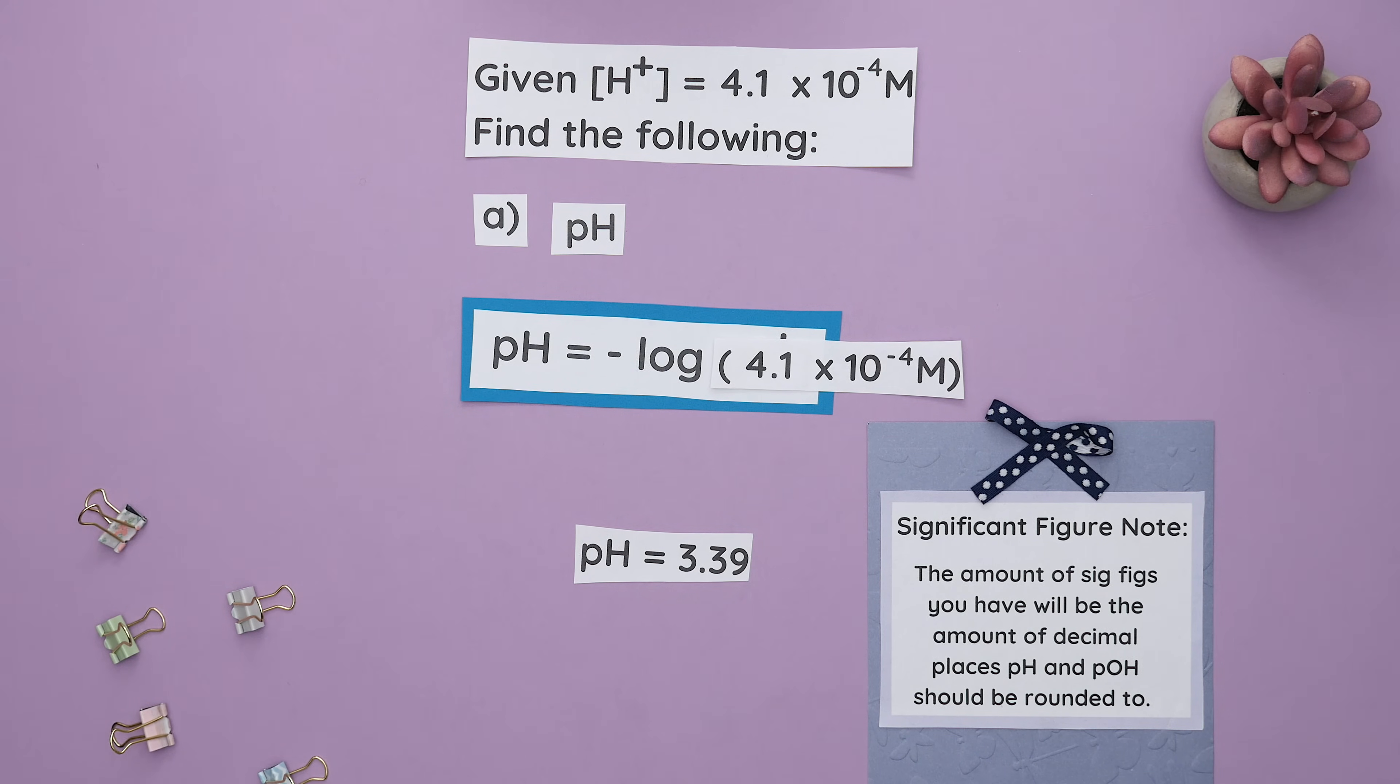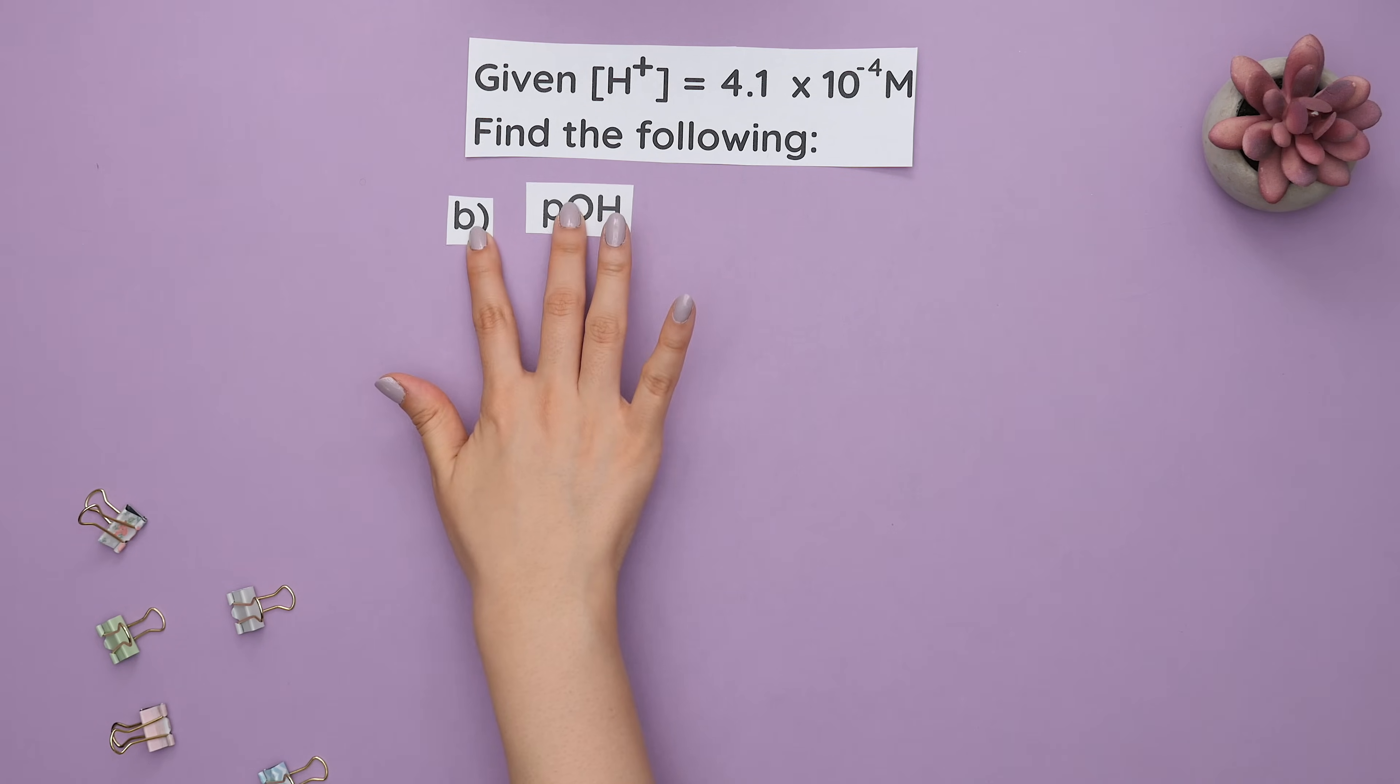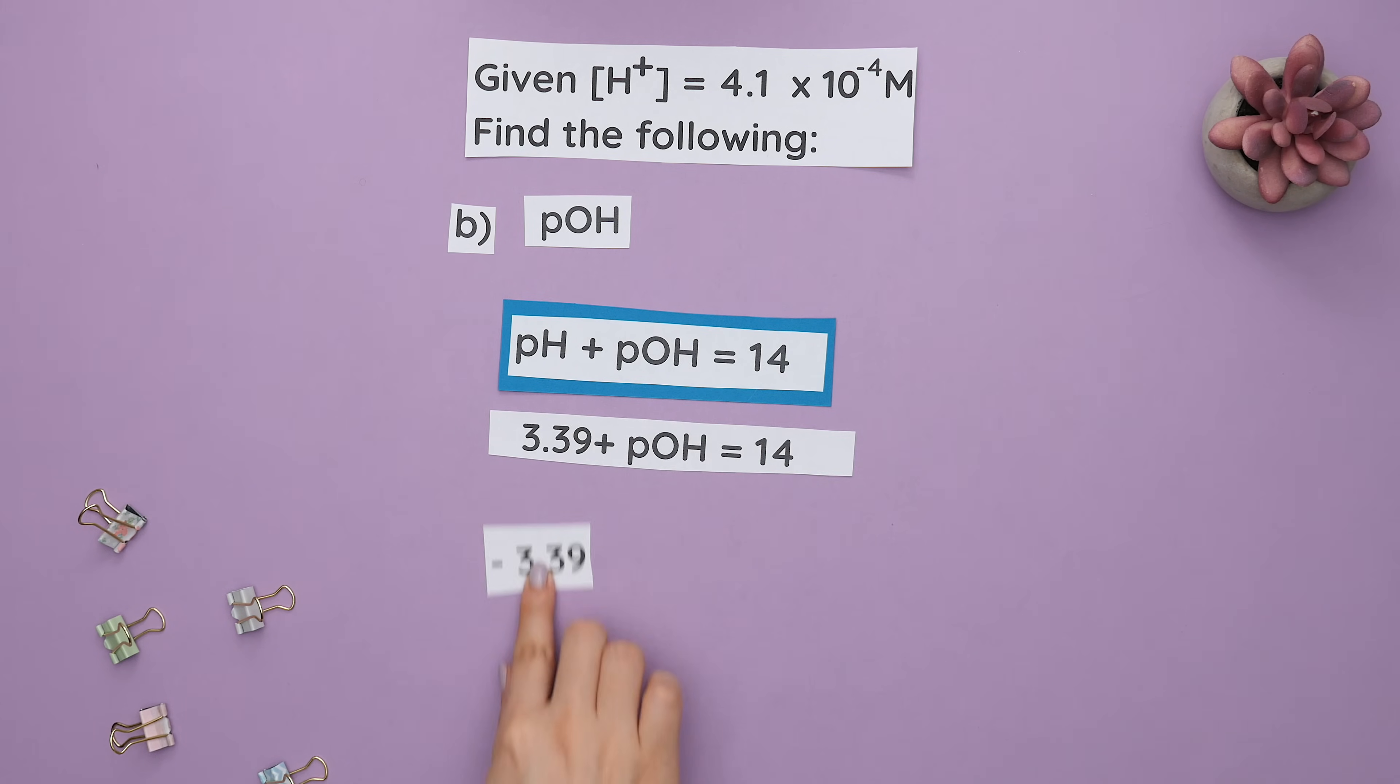And note, our pOH will also have two decimal places. Since we just found the pH, we can use this formula and plug in pH to find pOH. Subtract both sides by 3.39 and our pOH is 10.61.